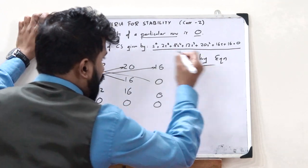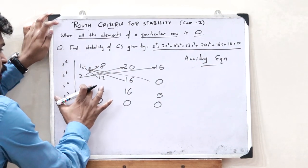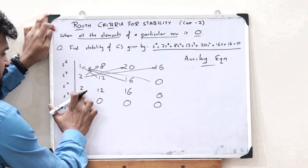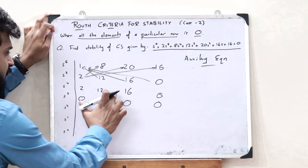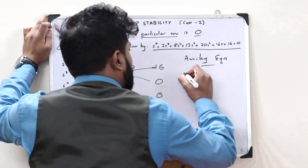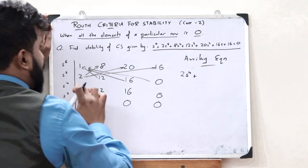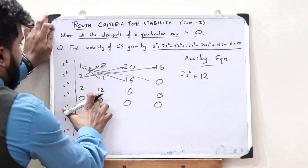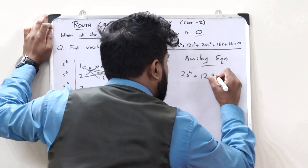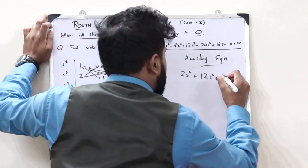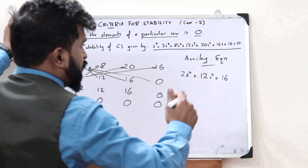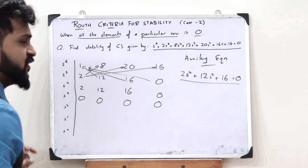To form the auxiliary equation we consider the row immediately above the all-zero row, which is the s⁴ row. The maximum power is s⁴, and taking the coefficients 2, 12, and 16 with alternating even powers of s, the auxiliary equation is: A(s) = 2s⁴ + 12s² + 16 = 0.